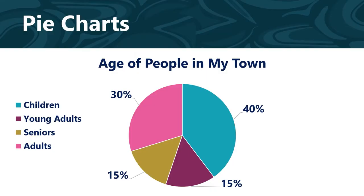Let's start with pie charts. A pie chart is a circular chart divided into sections. The full circle represents 100% of the data, and each slice of the pie represents part of the data. For example, this pie chart represents the age of the people in my town. As you can see, 30% of the people in my town are adults, 40% are children, 15% are young adults, and 15% are seniors — 30% plus 40% plus 15% plus 15% equals 100% for all of the people in my town.